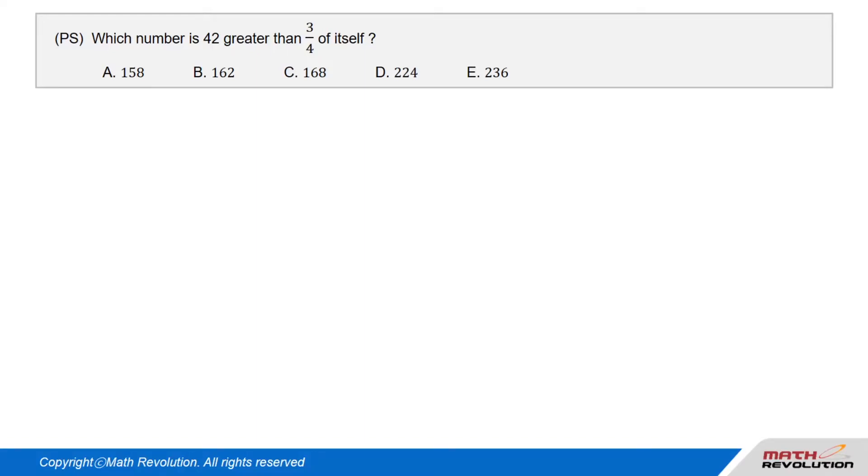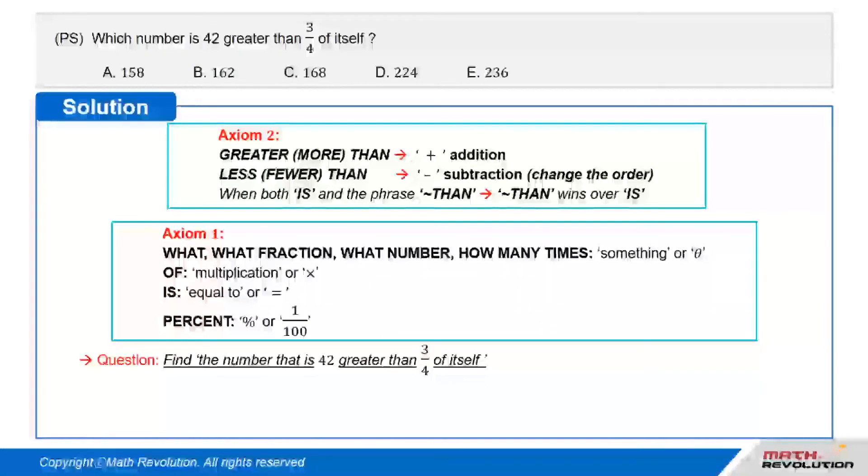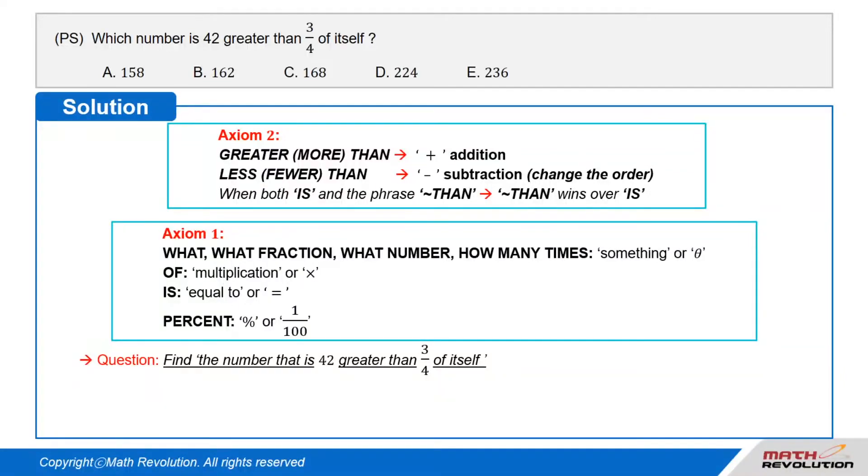Question PS: Which number is 42 greater than 3/4 of itself? Solution: We have to find the number that is 42 greater than 3/4 of itself.